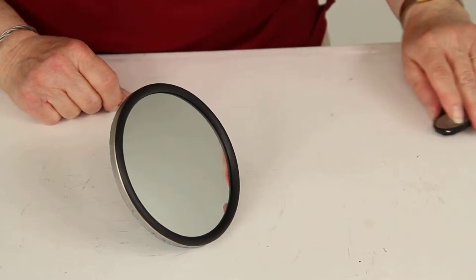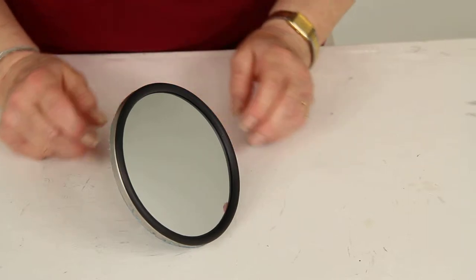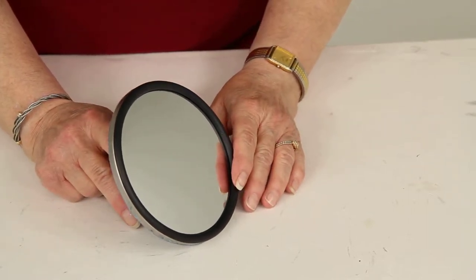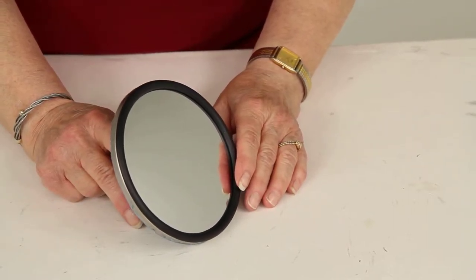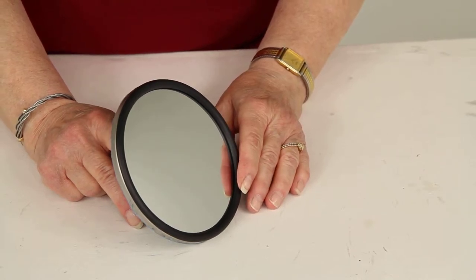Today we're reviewing part number WM6510 from Wheelmasters. This is a round convex blind spot mirror and it fits your Wheelmasters Vision Plus and Eagle Vision towing mirrors.